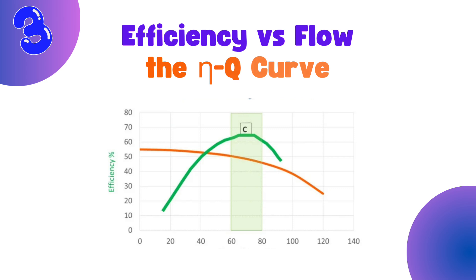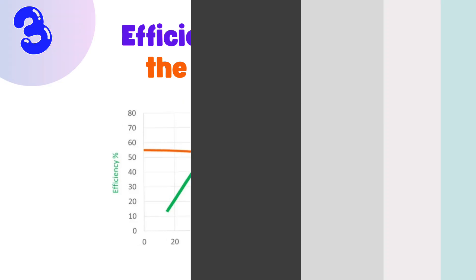Third, efficiency vs. flow rate, the Q curve. Every pump has a best efficiency point, or BEP. This is the sweet spot. Operating near the BEP minimizes energy losses and wear and tear.